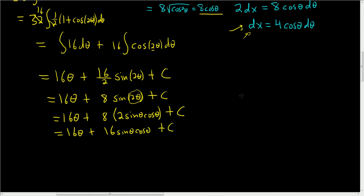And now let's go back to our original substitution. We said that 2x was equal to 8 sine theta. That means that the sine of theta, dividing by 8, you get 2x over 8, which is the same as x over 4. And using SOH-CAH-TOA, this is opposite over hypotenuse.